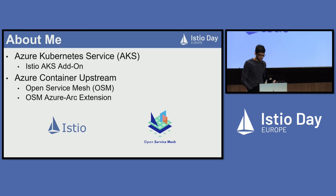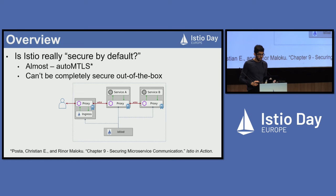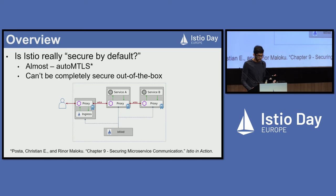Today I wanted to cover some important security considerations of using Istio, both based on feature requests and frequent questions we've received for our add-on, as well as broader guidelines and best practices adopted throughout the Istio community. Throughout the ecosystem it's become common to refer to Istio as being secure by default, but it's more appropriate to consider Istio almost secure by default. Even though many of Istio's security capabilities like MTLS and automated certificate management are enabled out of the box, there are still various vulnerabilities and loopholes that operators need to be aware of.